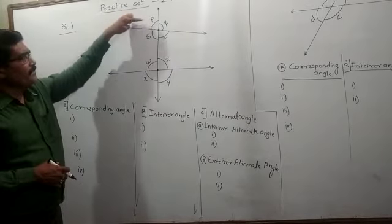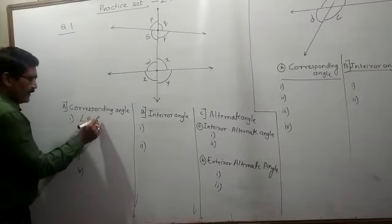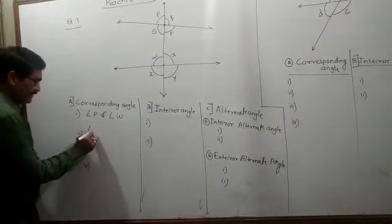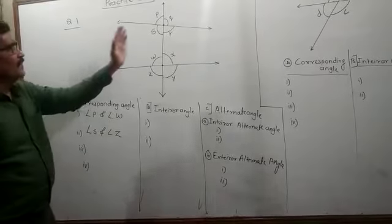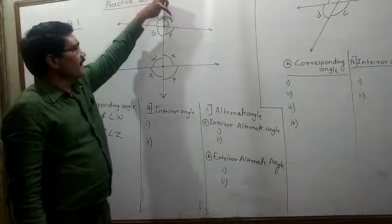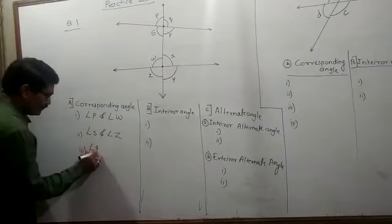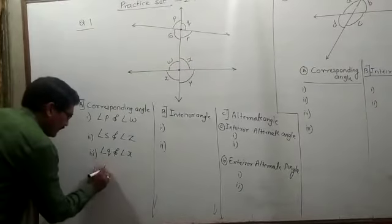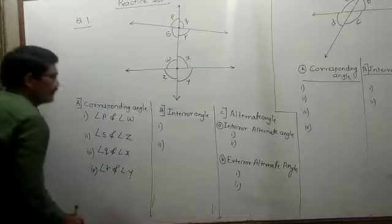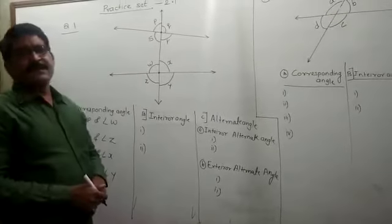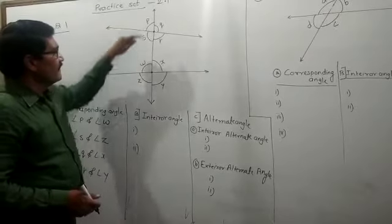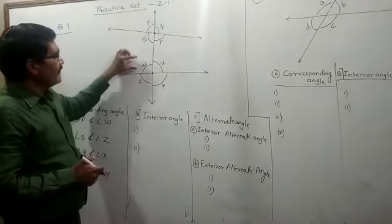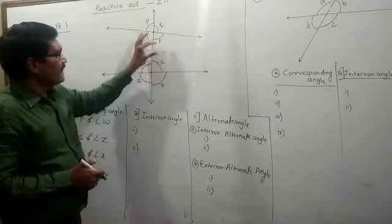The first pair of corresponding angles is angle P and angle W. The second pair is angle S and angle Z. To the right of the transversal, the corresponding angles are angle Q and angle X. The downside pair is angle R and angle Y. So the four corresponding angle pairs are: angle P and angle W, angle S and angle Z, angle Q and angle X, and angle R and angle Y.